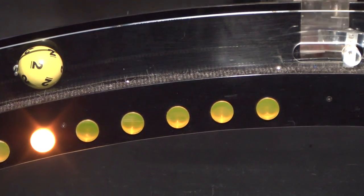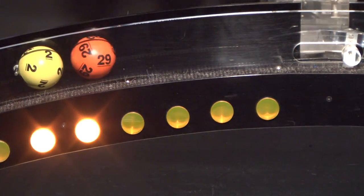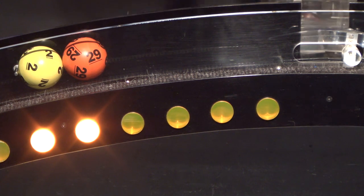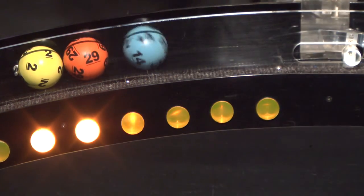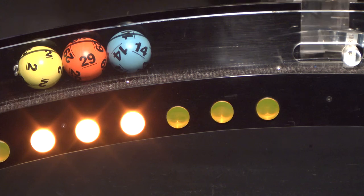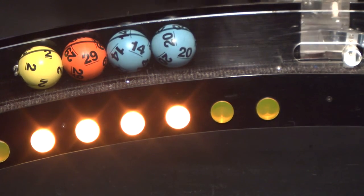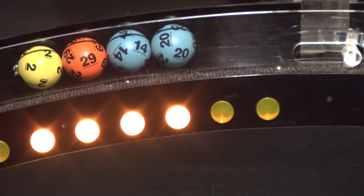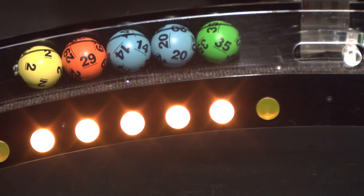Our first number is 2. Rolling behind that is 29, followed by 14. If you've matched these three numbers, you've already won a prize. Here comes 20, and finally 35.